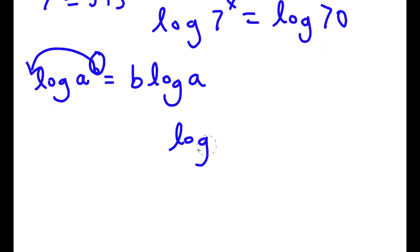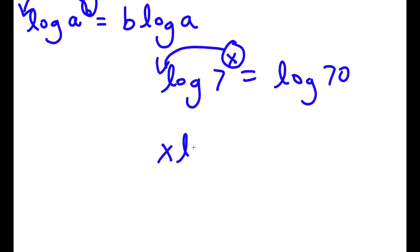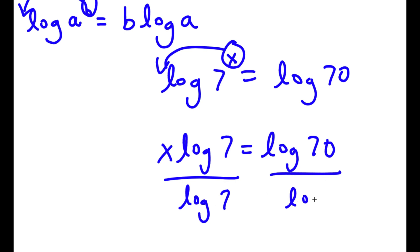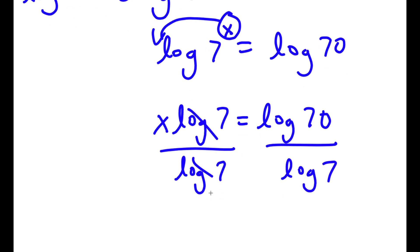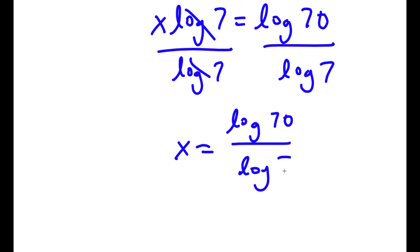Alright, going back to the problem: log of 7 to the power of x is equal to log 70. Now I can go ahead and move x to the front, so now I have x times log 7 is equal to log 70. Now I'm going to divide both sides by log 7. These two cancel out and I'm left with x is equal to log 70 over log 7.